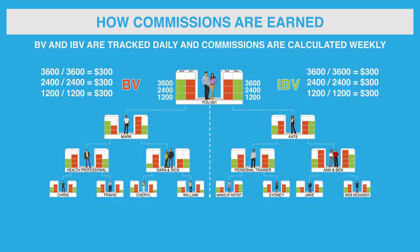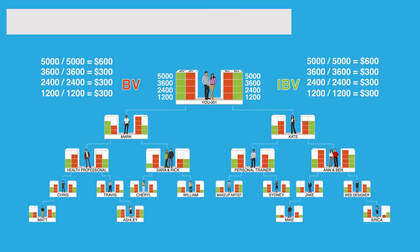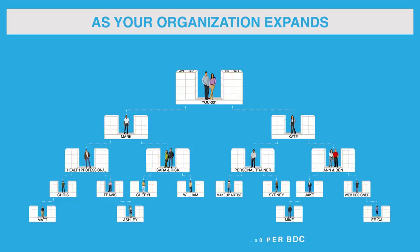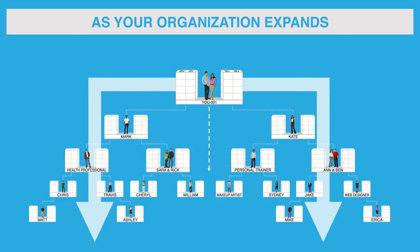And finally, when you accrue at least 1,400 BV more in your left and right banks, equaling a total of at least 5,000 BV in each bank, you earn a $600 commission. The same is true for IBV. You have the potential to earn $1,500 per week from BV and $1,500 per week from IBV, for a total of $3,000 every week for each business development center. Once you meet the 5,000 BV criteria, your left and right banks are reset to zero and begin to accrue new volume to earn commissions.